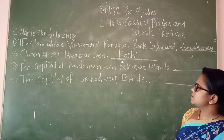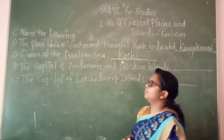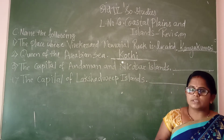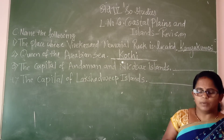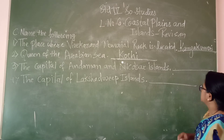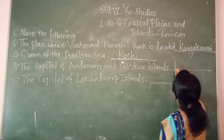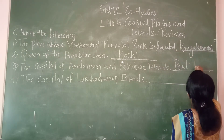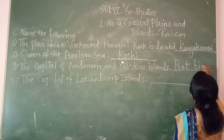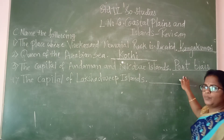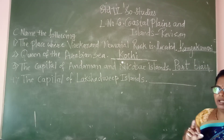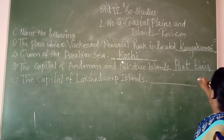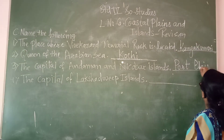Question number three: the capital of Andaman and Nicobar Islands. What is the capital of Andaman and Nicobar Islands? That is Port Blair. The spelling is P-O-R-T, Port, B-L-A-I-R, Blair.